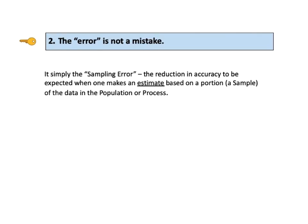Key to understanding number two says the error is not a mistake. The error is simply the sampling error. That is, it's the reduction in accuracy which we expect when we make an estimate based on a portion, a sample, of the data as opposed to counting the entire population or process. If we were able to calculate the statistic using all the data in the population or process, we would not need to take a sample so there would be no sampling error and thus there would be no margin of error.